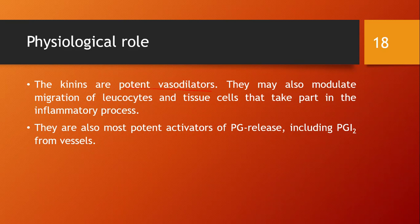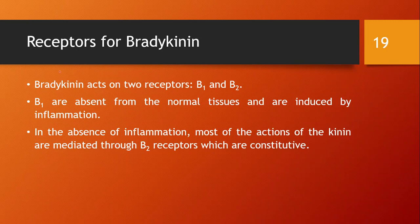Kinins are potent vasodilators and may modulate migration of leukocytes and tissue cells in the inflammatory process. They are also potent activators of prostaglandin release, including PGI2 (prostacyclin) from vessels. Bradykinin acts on two receptors: B1 and B2. B1 receptors are absent from normal tissue and are induced only by inflammation. In absence of inflammation, most kinin actions are mediated through B2 receptors, which are constitutively expressed.